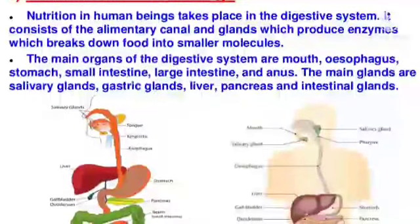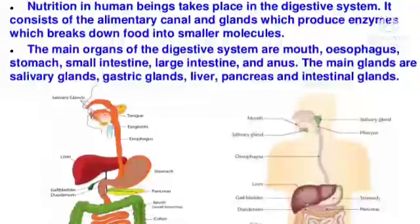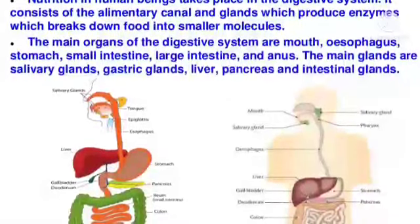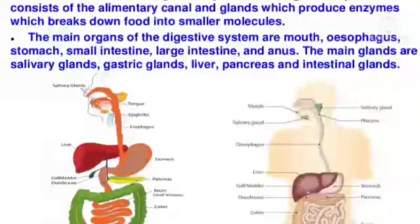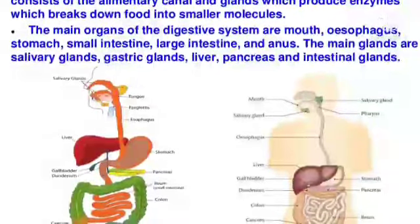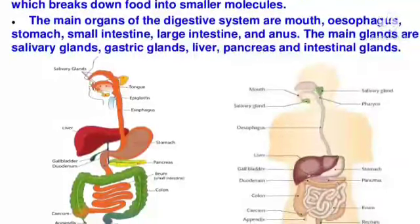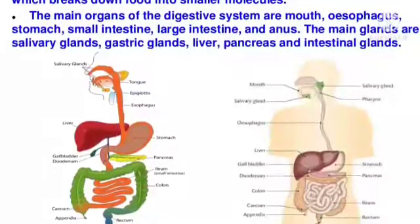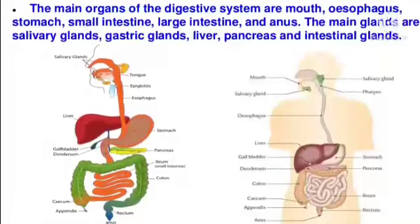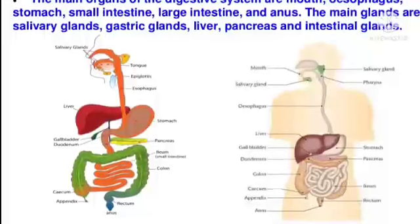Nutrition in human beings takes place in the digestive system. It consists of the alimentary canal and glands which produce enzymes that break down food into smaller molecules. The main organs are the mouth, esophagus, stomach, small intestine, large intestine, and anus. The main glands are the salivary glands, gastric glands, liver, pancreas, and intestinal glands.